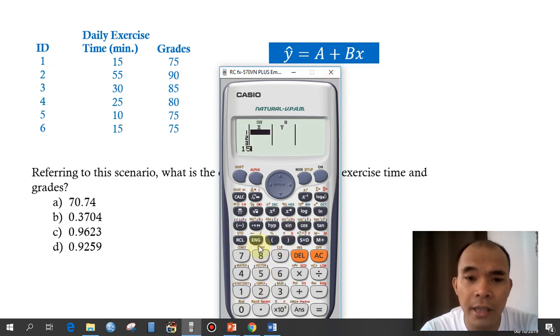And then just input the values there: 15, and then 30, 25, 10, and then 15. And then to go back, just press this one here.